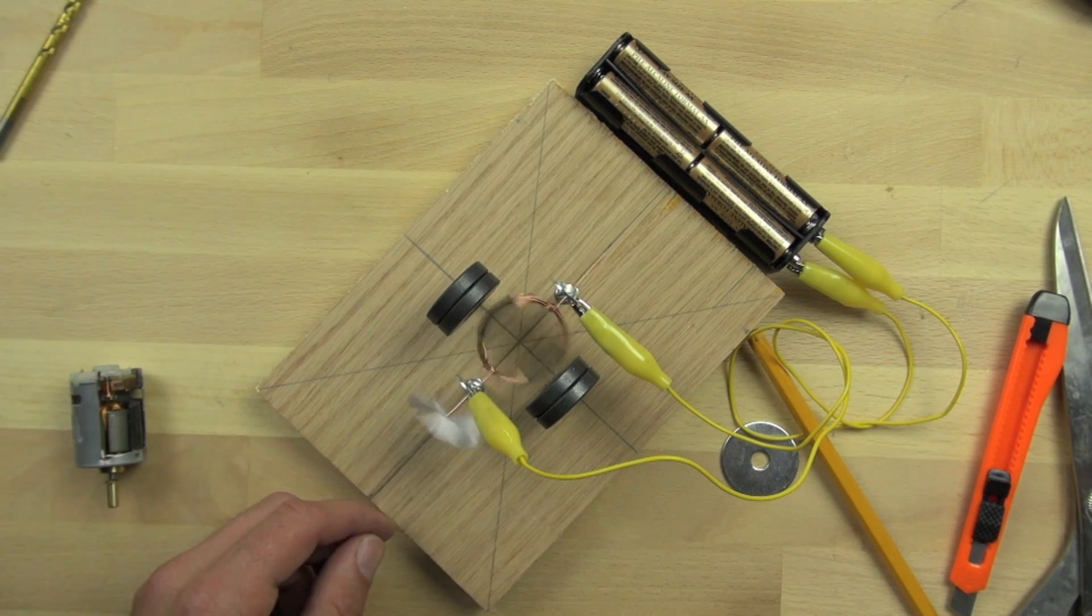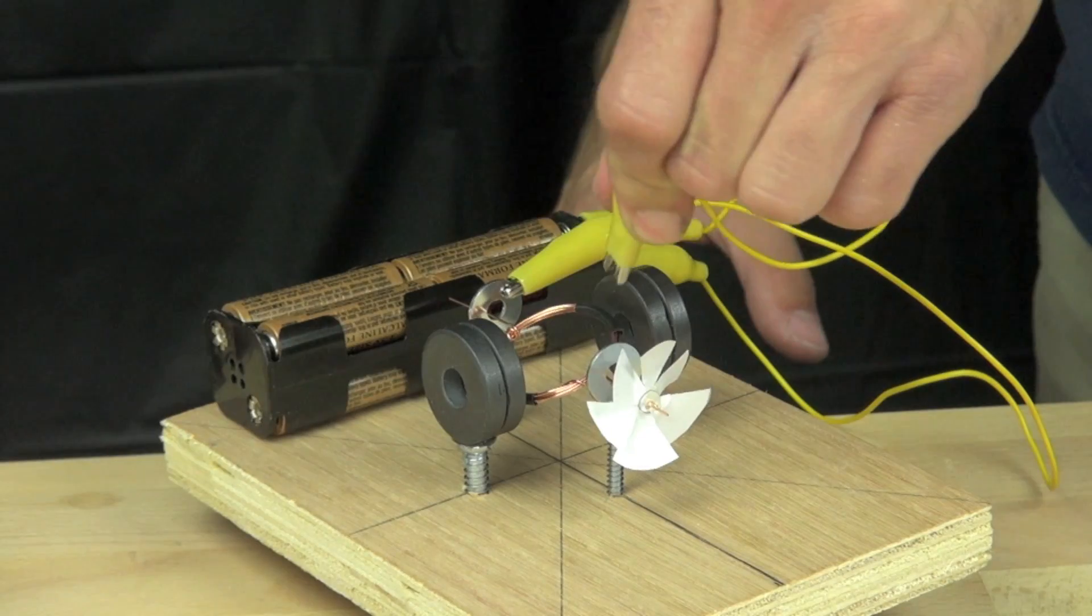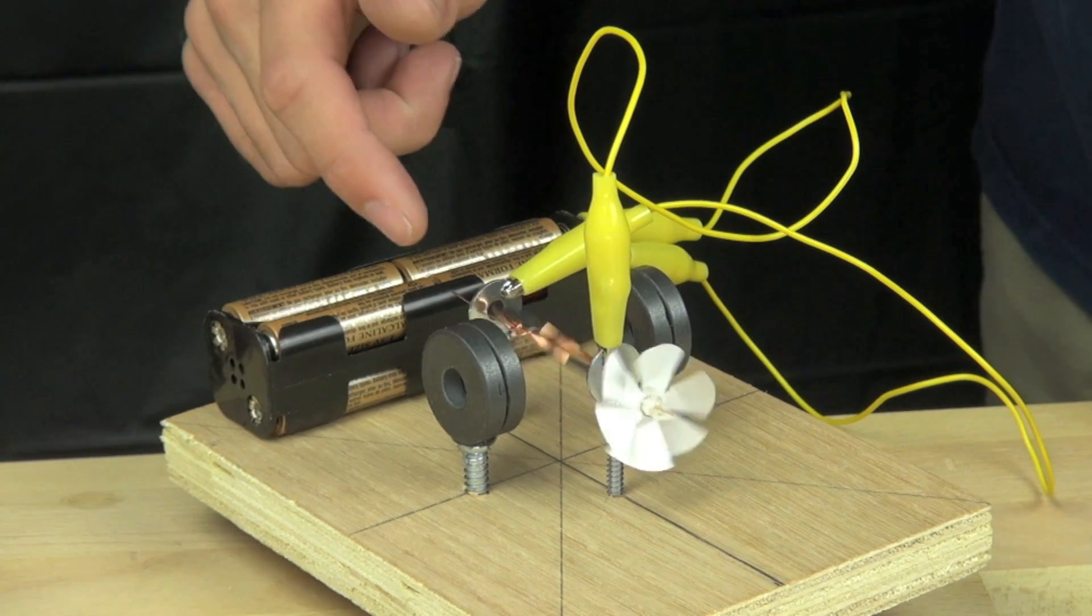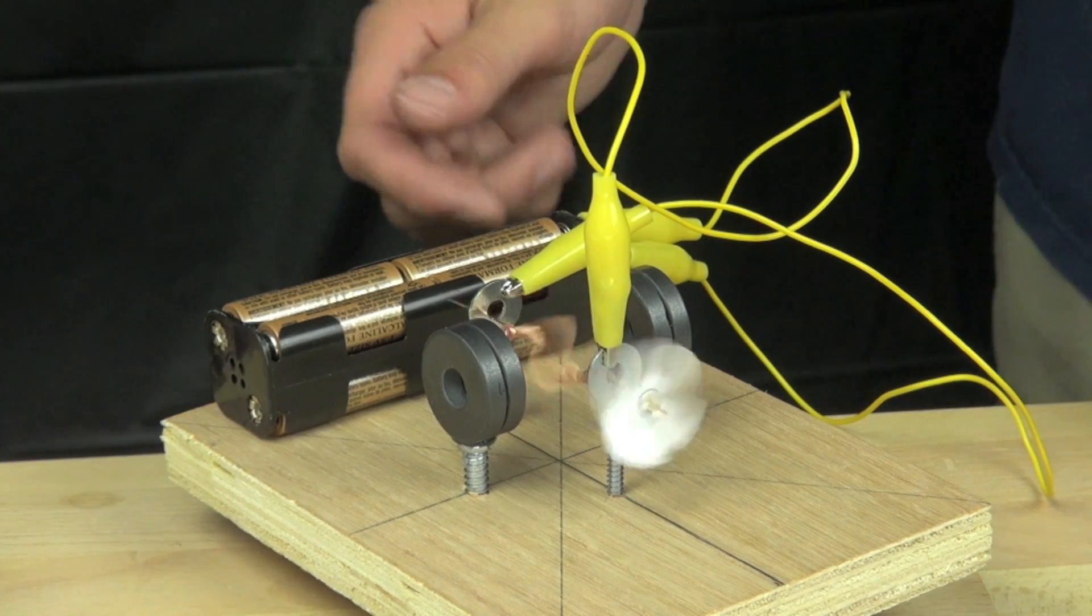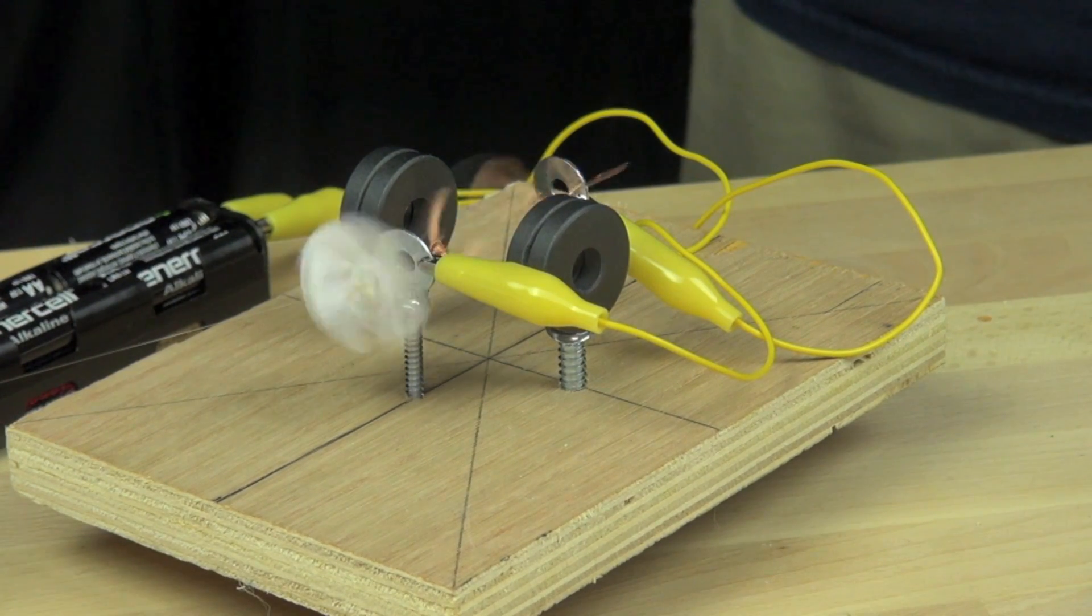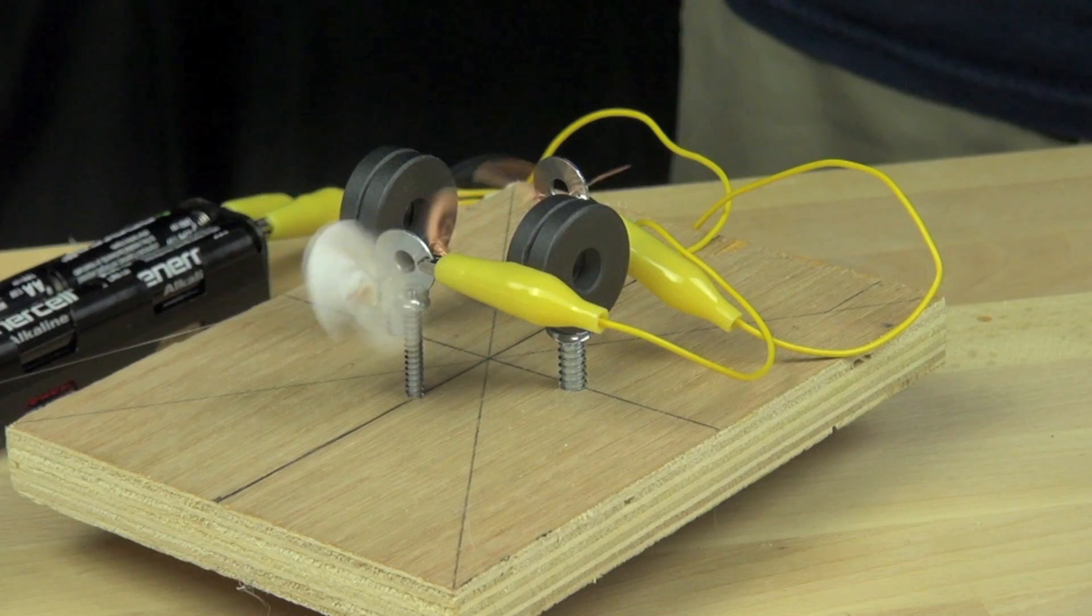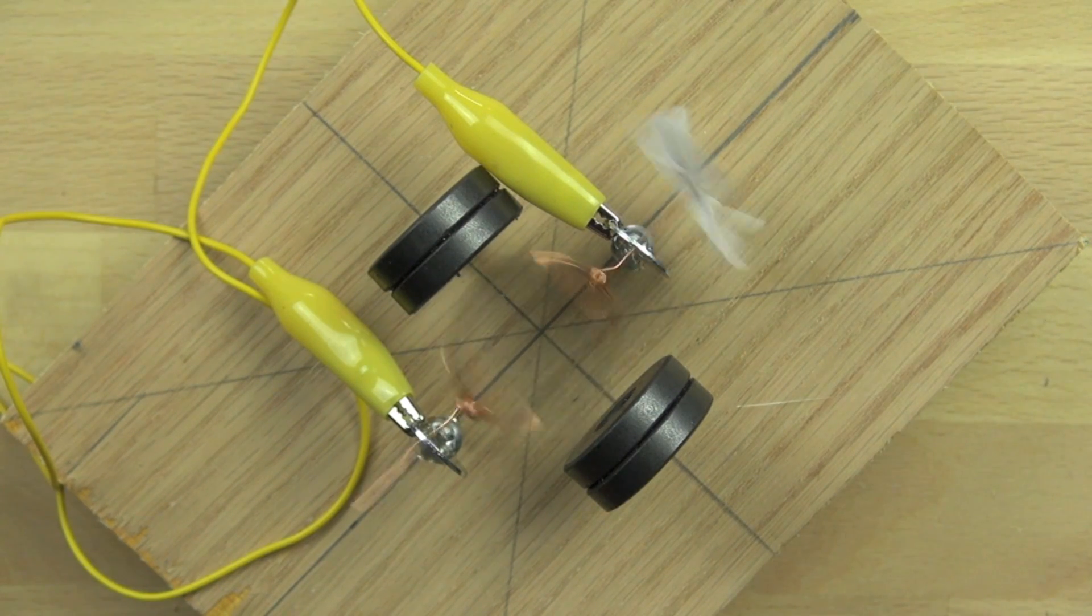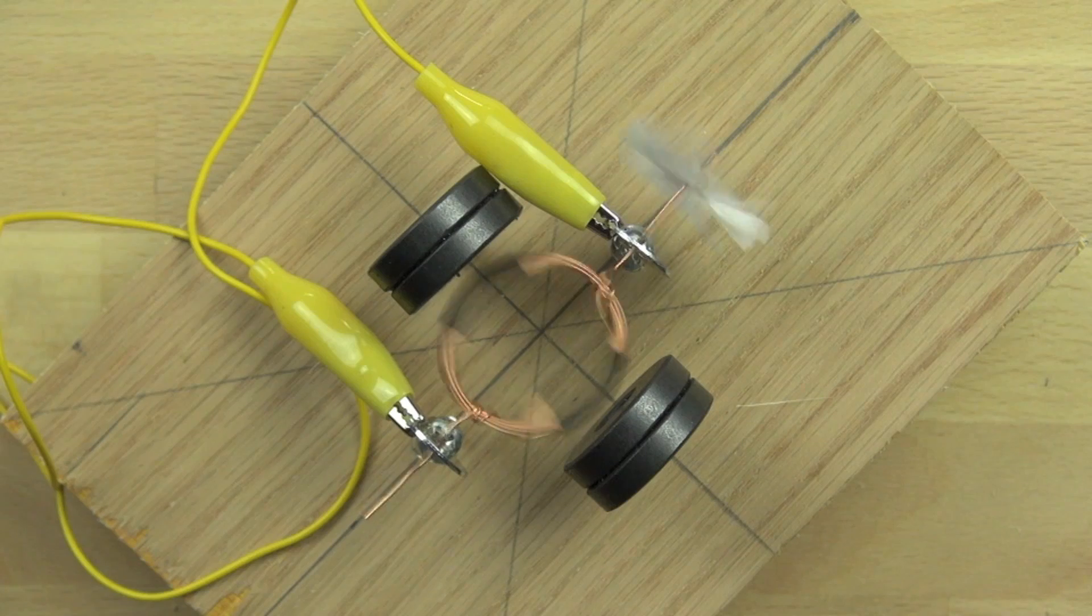So some interesting experiments you might want to try are, what happens when you take one of the magnets away? If you have the two on either side, what happens when you take one away? What happens when you rotate the magnets around and they're not opposite poles facing but they're similar poles facing? If you have enough magnet wire, you might want to try scraping all of the magnet wire clean and seeing what happens or scraping none of it and seeing what happens.